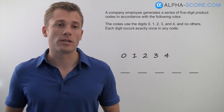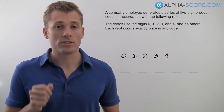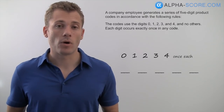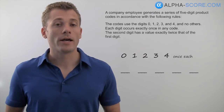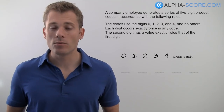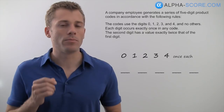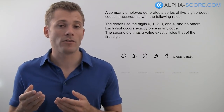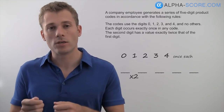Our next rule tells us each digit occurs exactly once in any code. You don't really need to add this to your diagram, but write in 'once each' so everything is captured. Our following rule says the second digit has a value exactly twice that of the first digit. Think about how this looks in your diagram: whatever goes into the first spot, the second spot has to be exactly two times that. So just put 'times two' between the first and second spots — first spot times two equals second spot.